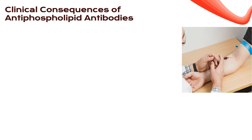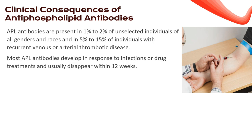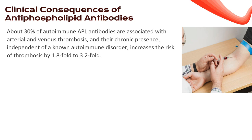APL antibodies appear in 1% to 2% of individuals from all walks of life, but take center stage in 5% to 15% of individuals with recurrent venous or arterial thrombotic disease. Most develop in response to infections or certain medications, vanishing within 12 weeks. Autoimmune APL antibodies are prominent in collagen vascular diseases like lupus, rheumatoid arthritis, scleroderma, and Sjögren's syndrome, and sometimes lead to primary antiphospholipid syndrome (APS). 30% of these antibodies are linked to both arterial and venous thrombosis; their chronic presence heightens thrombosis risk by 1.8-fold to 3.2-fold.